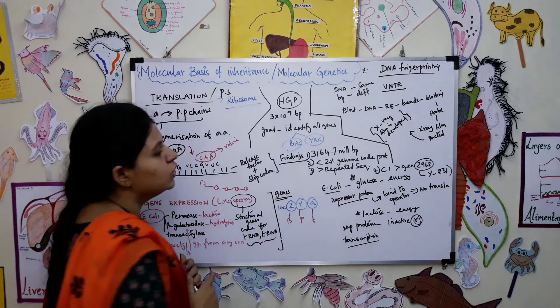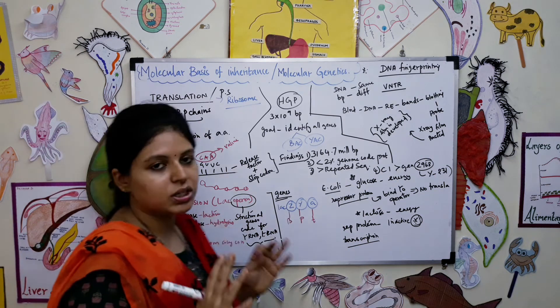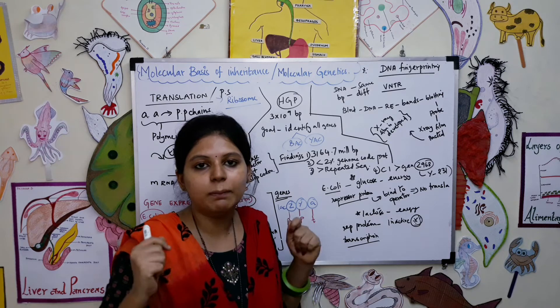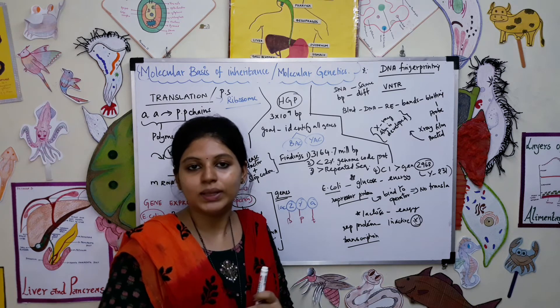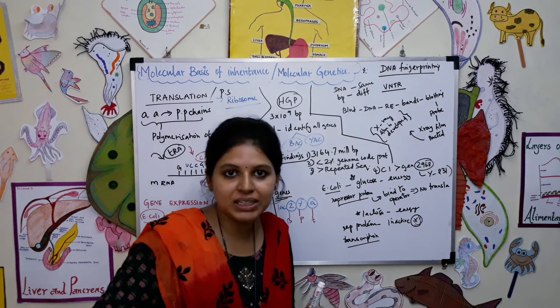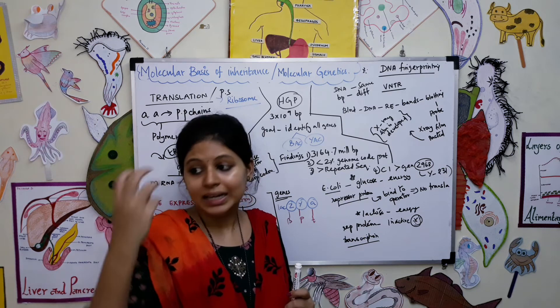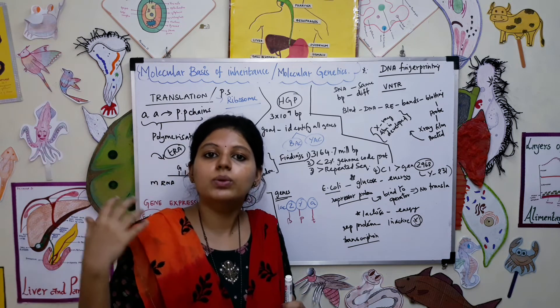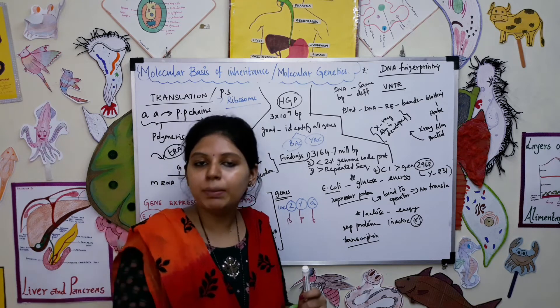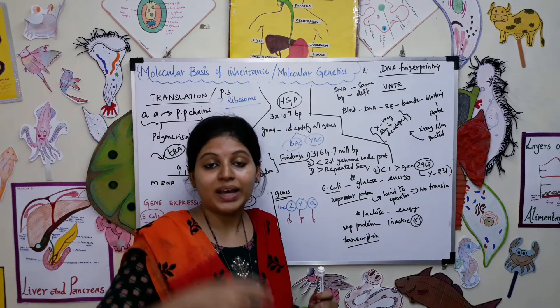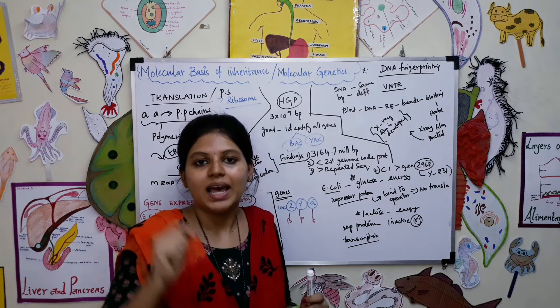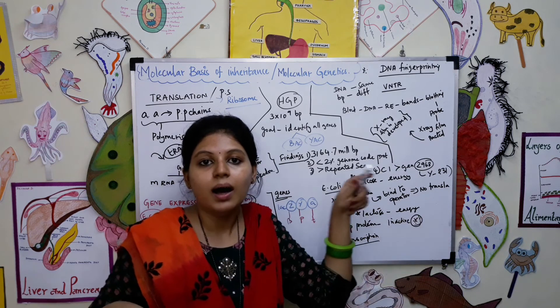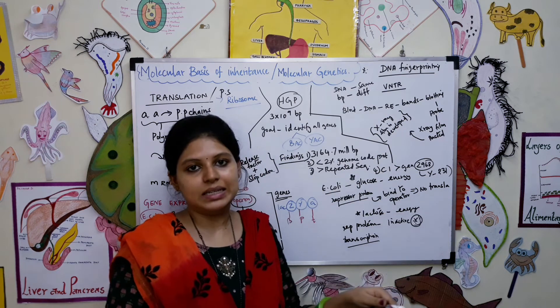Now we will talk about DNA fingerprinting. DNA fingerprinting is an important technique in forensic science to find who is the murderer. They take all the evidences - the blood sample, nail sample, hair strands. With all these samples they amplify the DNA and find the specific sequence, and they check whether this sequence is matching with the murderer's sequence or anybody who is accused.